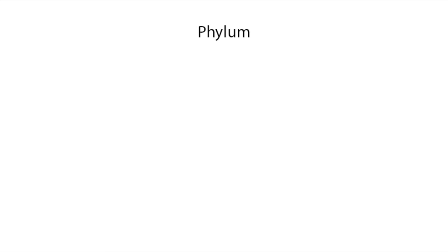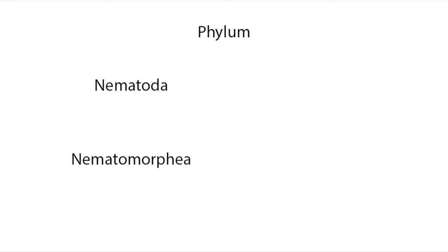The last predominantly worm phyla are the nematodes, which can be found everywhere in the world in huge numbers, nematomorphans, nemertea, and acanthocephala. That's a lot of worms.